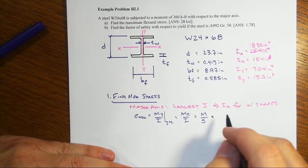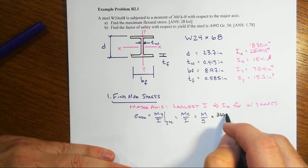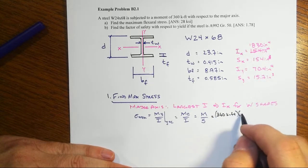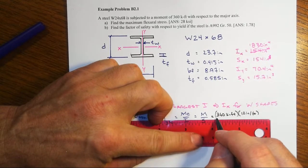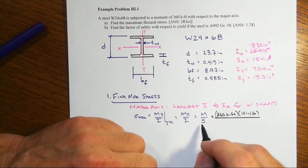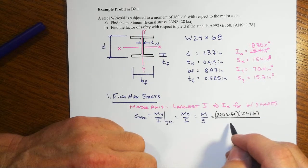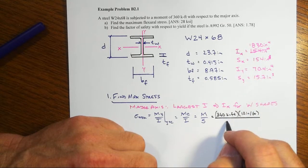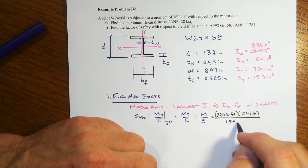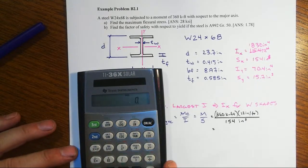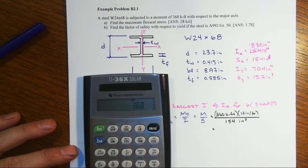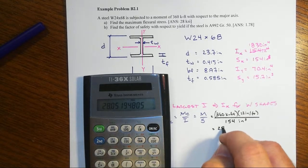This is all with respect to the X axis. We've got 360 kip-feet, and right away I want that in kip-inches because I want a stress in KSI. I'm going to be dividing by S — that's I over C — which is length cubed, tabulated for us as 154, or more precisely 154.4 cubic inches. So: 360 times 12 divided by 154 gives us right about 28 KSI.